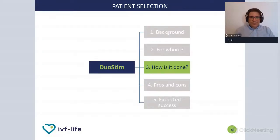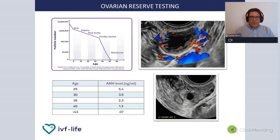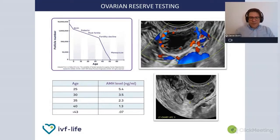Let's talk about how double ovarian stimulation is conducted. Before choosing the adequate stimulation protocol for any patient, it is important to perform thorough ovarian reserve testing. This could be done with an ultrasound test — here is a picture of an ovary showing three tiny follicles of different sizes, which is a low count for this ovary. We could also do a test of the anti-Müllerian hormone levels, and if we have a level below 1.2, the suspicion of poor response is quite high. Basically, this patient, even with a successful stimulation, might produce three or less eggs.